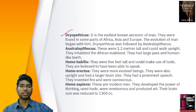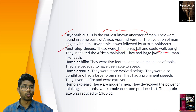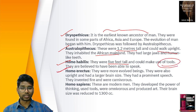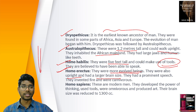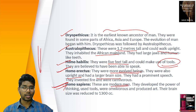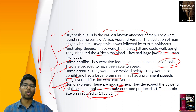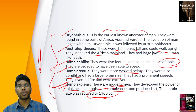Dryopithecus is the earliest known ancestor of man. Australopithecus were about 1.2 meters tall, could walk upright and inhabited the African mainland. Homo habilis were about 5 feet tall and could make use of tools. Homo erectus were more evolved, completely erect, also upright and had larger brain size. Homo sapiens — that's us, the modern man — developed the power of thinking, used tools, were omnivorous and produced art, with a brain reduced to about 1,300 cc.